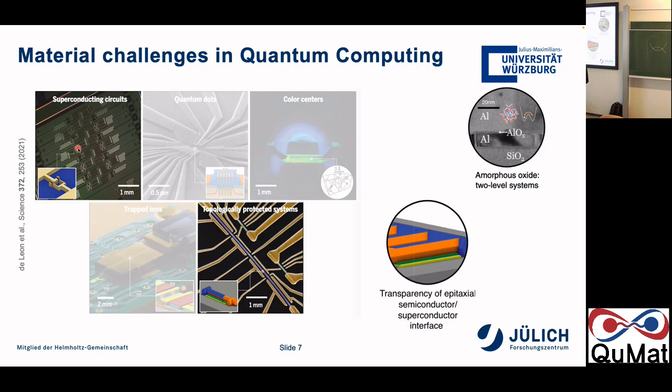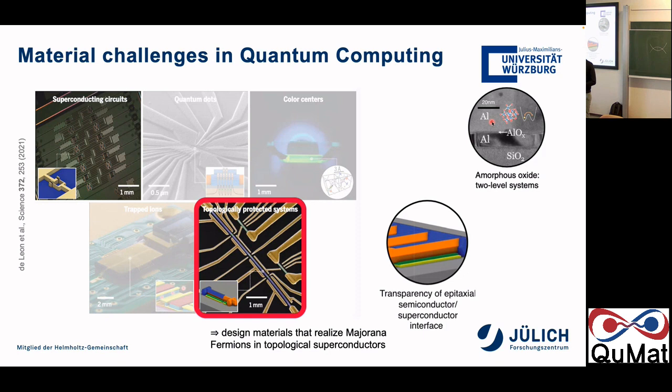You have interfaces between superconductors and non-superconductors, such as aluminum and aluminum oxide, and again a superconductor. The interface chemistry and ordering of atoms at these interfaces plays an important role. Another topic is topologically protected qubits, where you use topology to build a topological superconductor. In there you can realize Majorana fermions, which are the building blocks for Majorana qubits that a lot of people are interested in.